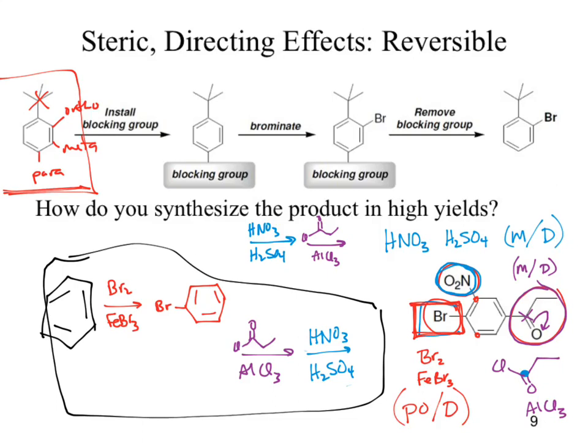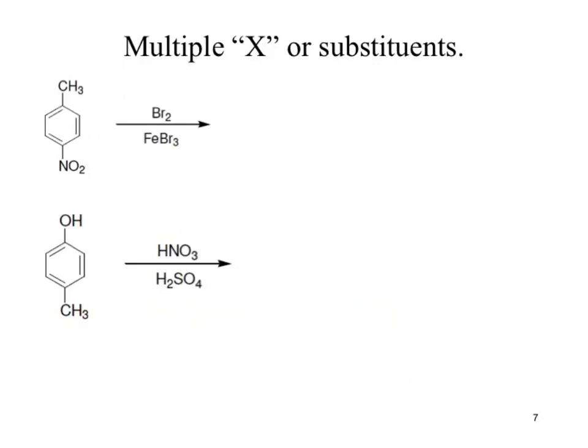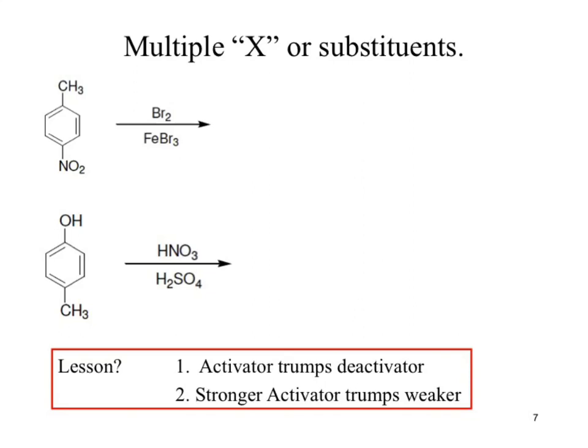So bromine directs para/ortho. Hypothetically, if they were both meta, which one would outrank for the third step? What's our rule if we've got two competing positions for our substitution? Activator trumps. Strongest activator trumps — always, always, always. Activator trumps deactivator. The next rule says activator trumps weaker activator, which means the strongest activator — that's the one that wins. That's what controls where our substitutions occur.